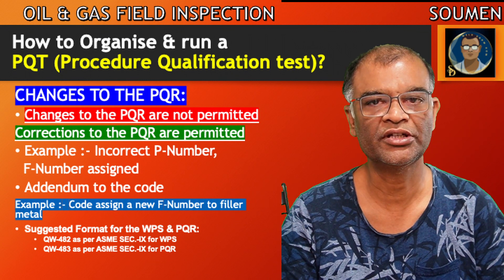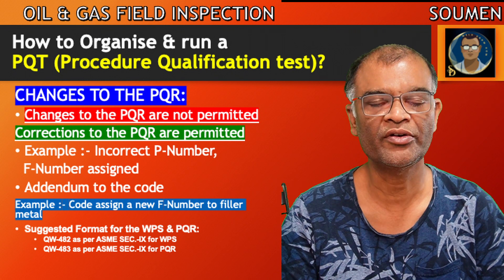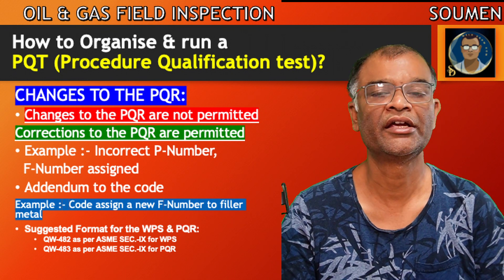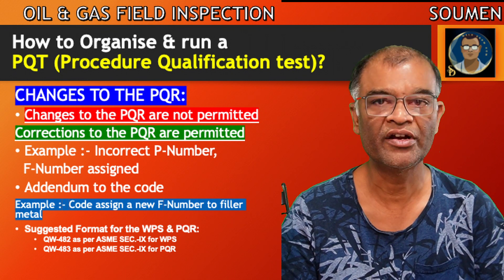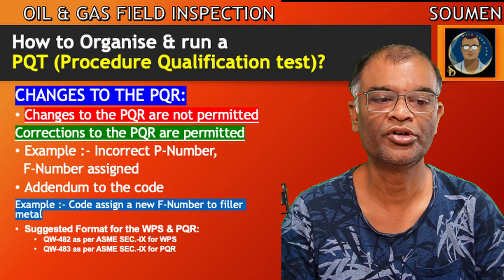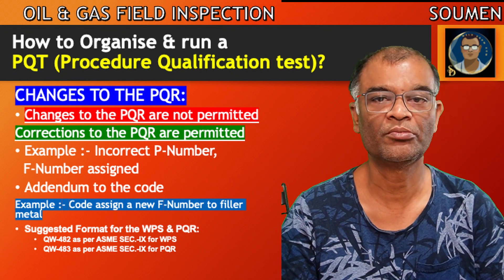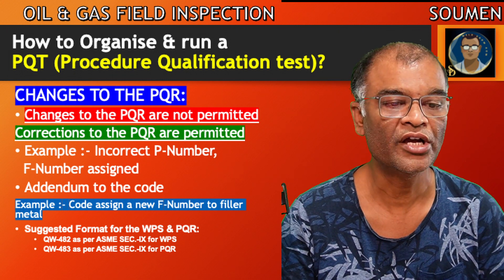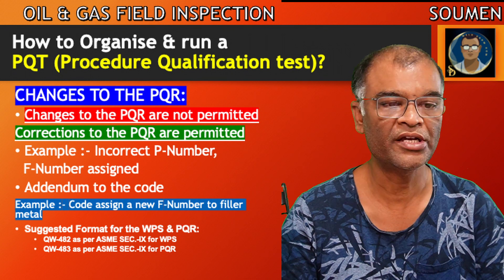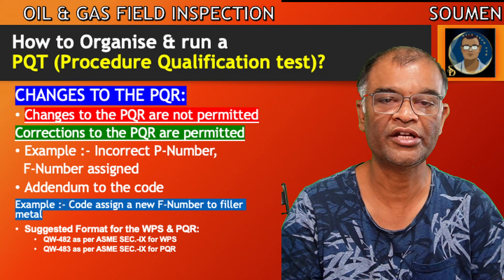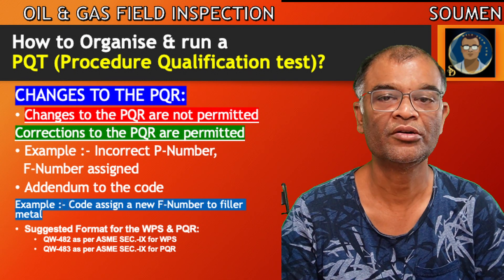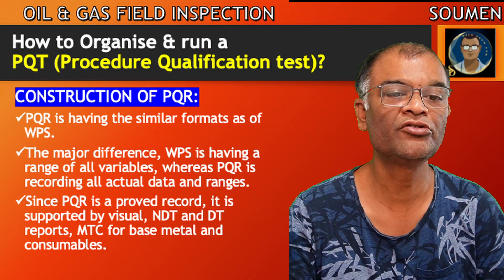Changes to the PQR: revision of a PQR is generally not permitted except for some minor changes like incorrect P-number or F-number assigned, or an addendum to the code. The suggested format for WPS and PQR is QW-482 as per ASME Section 9 for WPS, and QW-483 as per ASME Section 9 for PQR.